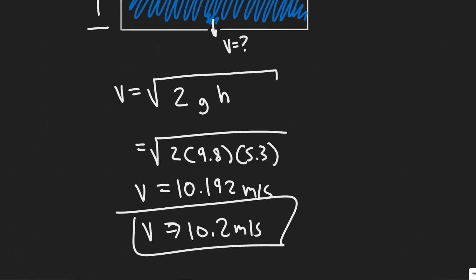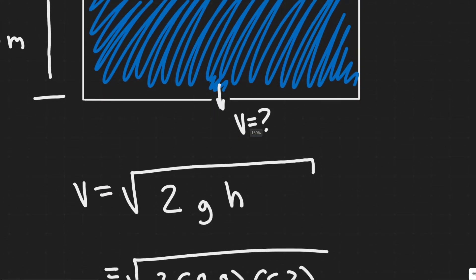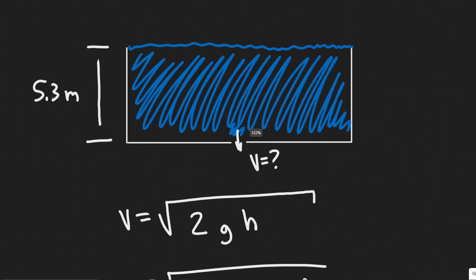So how fast is the water going to flow? It's going to flow at a velocity of 10.2 meters per second at the bottom of this hole, right? In a storage tank, 5.3 meters.